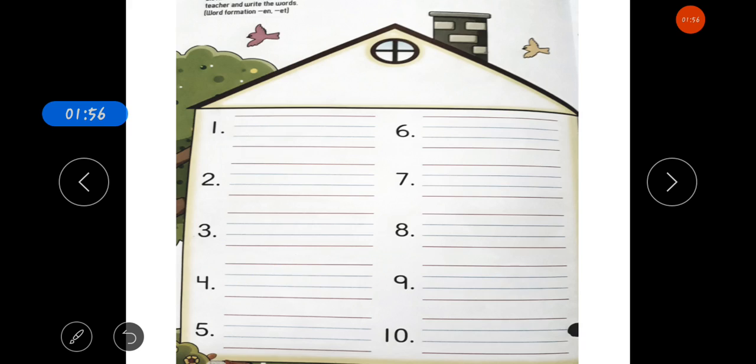Now, next worksheet. What do you have to do in this worksheet? You have to listen and write. This is dictation. Listen to your teacher and write the words. Word formation: -en and -et. All the words formed with -en or -et, you have to write them in this dictation.